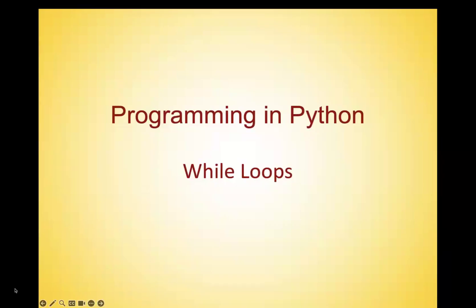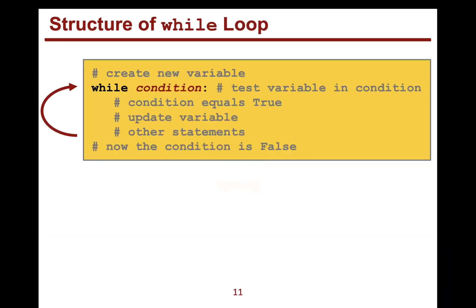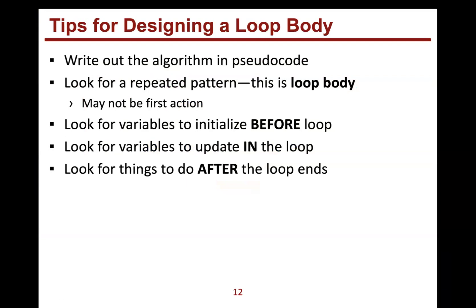This video continues talking about while loops. We talked about the structure of a while loop, so let's go with tips for designing a loop body. We like to write out our algorithm in pseudocode to start, then look for the repeated pattern — lines of code that seem to repeat, changing only by something we can turn into a variable. We look for variables to initialize before the loop and variables to update inside the loop, then things to do after the loop ends.